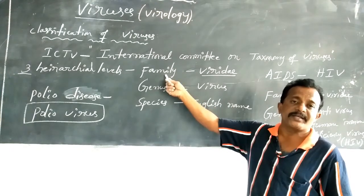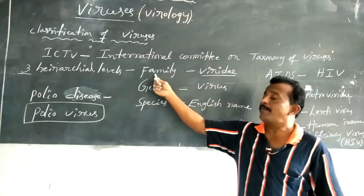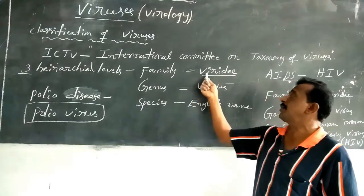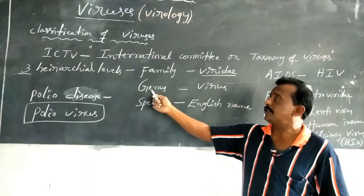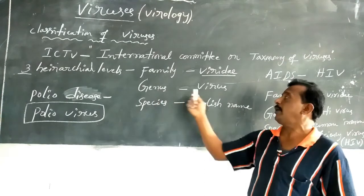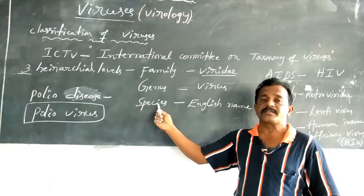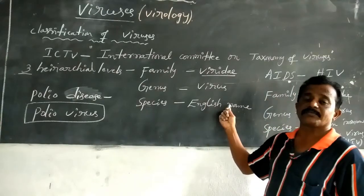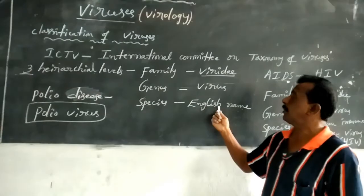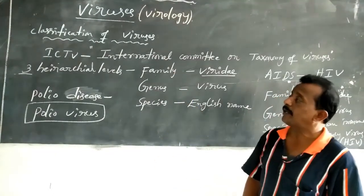Family names always end with the suffix 'viridae'. Genus names always end with the word 'virus'. Third hierarchical level is Species. Species names are always in English names, describing the common nature of those species. These three are the three hierarchical levels.